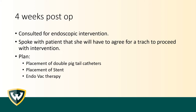I was then consulted for an endoscopic intervention. I spoke with the patient and told her she would need to agree to a trach to proceed with any intervention, especially if we were going to pursue endovac therapy. The plan was to either place double pigtail catheters — one or multiple — or a stent, or endovac therapy, really depending on the endoscopic findings.